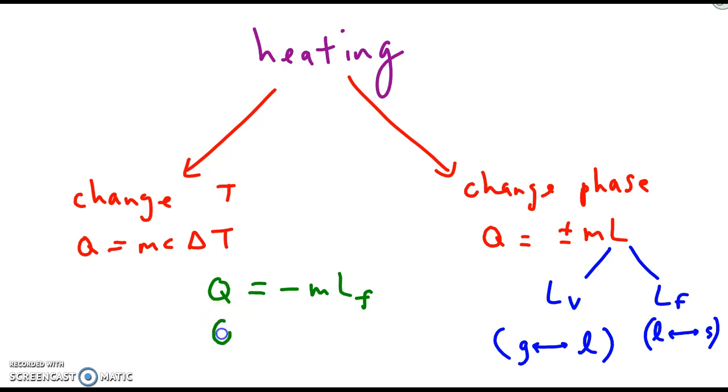If you were melting by contrast, when you melt an object you add heat to it. So you have a positive sign, we choose the positive. And then you use again for melting the latent heat of fusion because melting is going from solid to liquid.